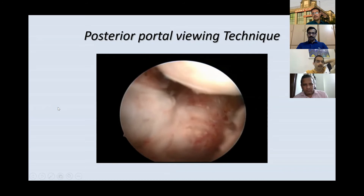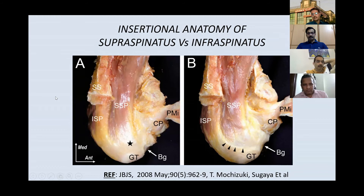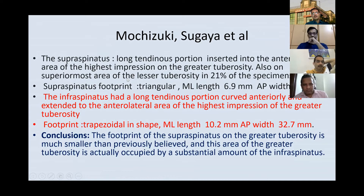This is an important article by Mochizuki and Sugaya from Japan that changed our understanding of the insertional anatomy of the supraspinatus and infraspinatus. They found the supraspinatus has a long tendinous portion with insertion only on the anterior-most part in a triangular shape. About 21 percent of patients also have supraspinatus insertion into the lesser tuberosity. The majority of the greater tuberosity is occupied by the trapezoidal insertion of the infraspinatus, which has a large footprint.